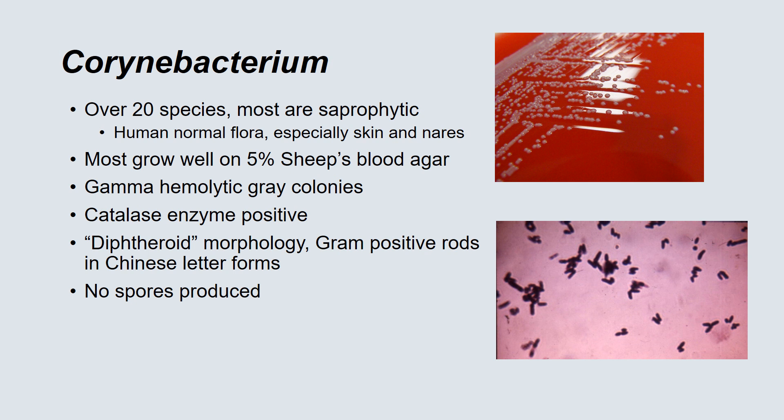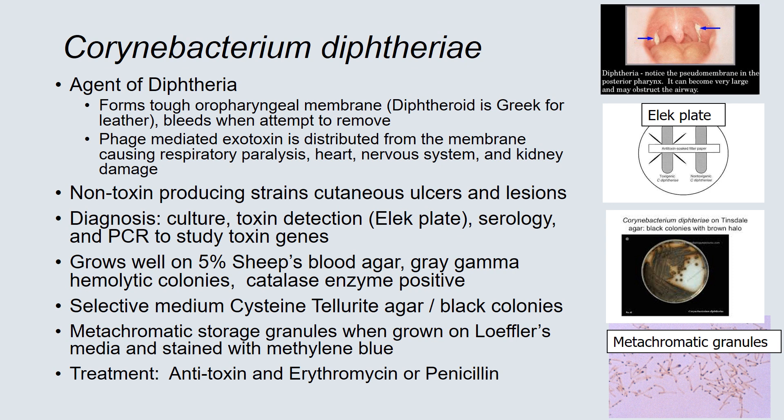Most Corynebacterium species grow very well on 5% sheep's blood agar. They are gamma-hemolytic gray colonies and catalase enzyme positive. They have what's called a diphtheroid morphology — if you look at the gram stain on the right-hand side, you can see that the gram-positive rods are in Chinese letter forms. Also notice that there are no spores produced. The most important species of the genus is Corynebacterium diphtheriae, which is the agent of diphtheria.